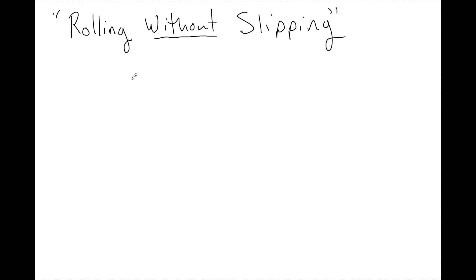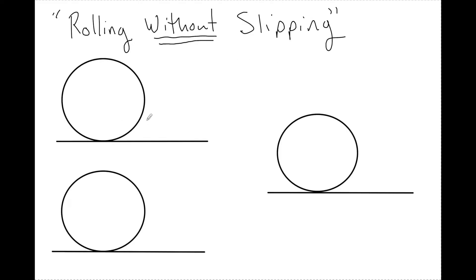Pretty much what that's going to look at is how things that are rolling have both a translational and a rotational velocity. And when there's no slip on the surface, this becomes a very special case.